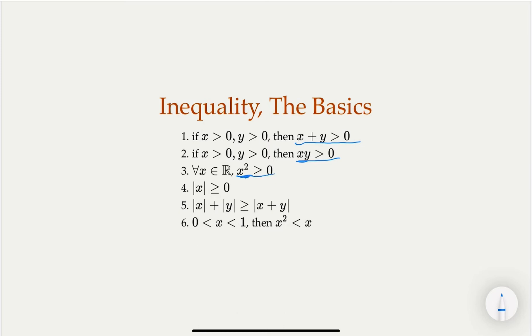Another common property is that when you have a number squared, it's always non-negative, even if it's a negative number, because negative times negative is positive. And there's absolute value, which measures the distance of a position on the number line to the origin, so it's always non-negative. There's the triangle inequality for absolute values: |x| + |y| is no smaller than |x + y|. Also useful: if a positive number is smaller than 1, squaring it makes it smaller.